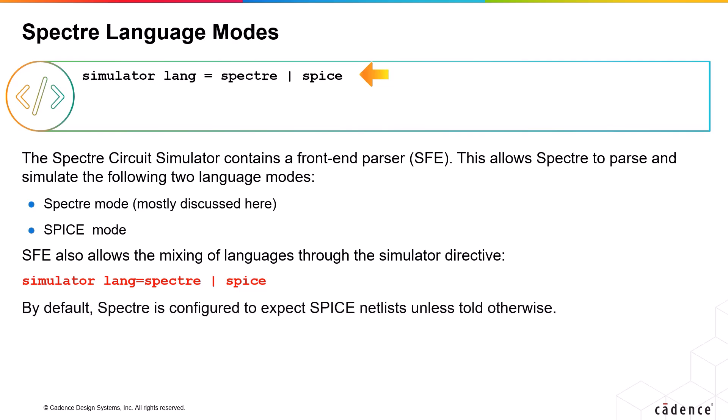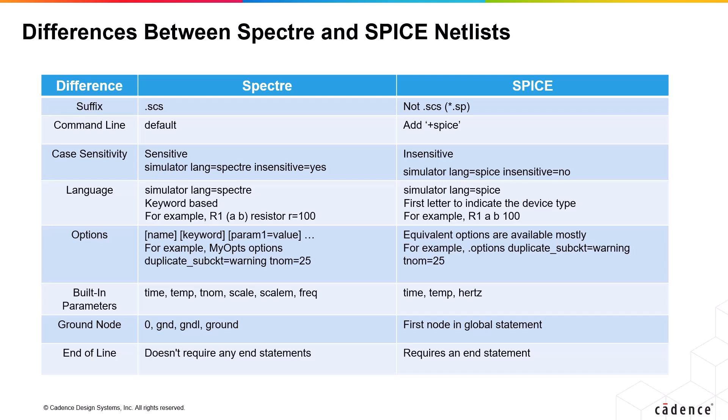By default, Spectre is configured to expect a SPICE NETLIST file unless you explicitly mention that it is of Spectre syntax. The first thing that helps you identify between a Spectre and SPICE NETLIST is the file extension — a Spectre NETLIST will have a .SES extension, while a SPICE NETLIST has an extension .SP. With a Spectre NETLIST, you can run a simulation with the Spectre command using default simulator options, while for a SPICE NETLIST, you need to add the +SPICE option to the Spectre command. This ensures NETLIST conversion, parameterization, and device models are interpreted as traditional SPICE instead of Spectre.